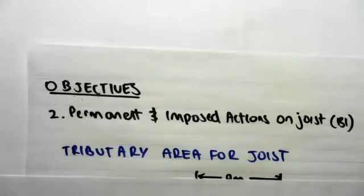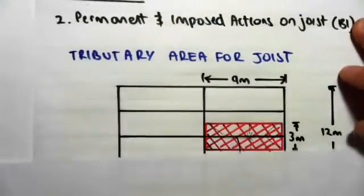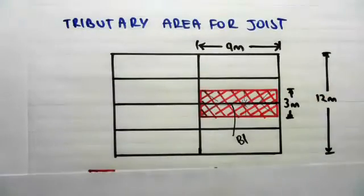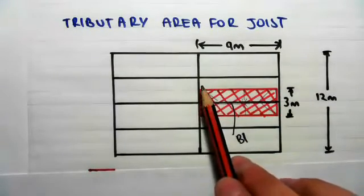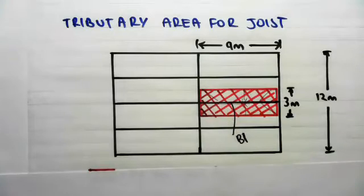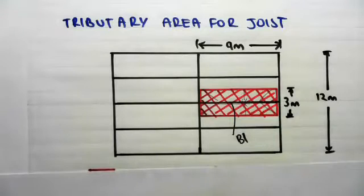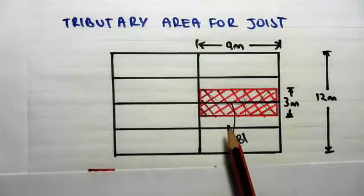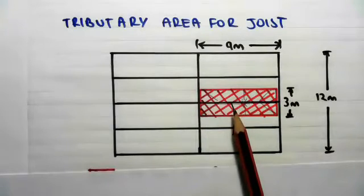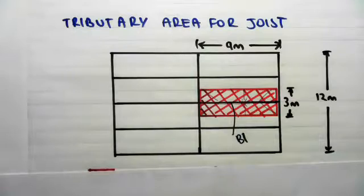The first thing we need to do is find the tributary area for the joist. I mentioned this at the start of the series: because the joists and the girders are in the same plane, the tributary area could behave like a one or two-way slab. The load path is such that because the girders and joists are in the same plane, we could have the slab behaving as a one or two-way slab.